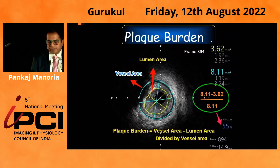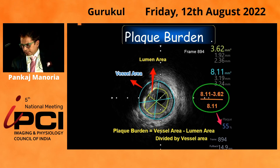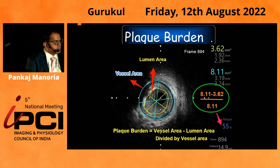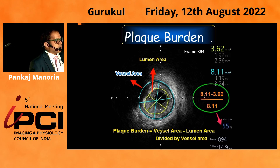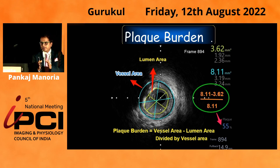There is something called the plaque burden. The plaque burden is how much of the vessel area the plaque is occupying. It can be easily measured: you subtract the lumen area from the vessel area — it gives you the plaque — and once you divide it by the vessel area, it gives you the plaque burden. In this case, the vessel area was around 8.1 and the MLA was around 3.62.